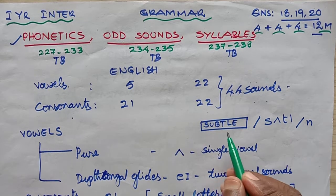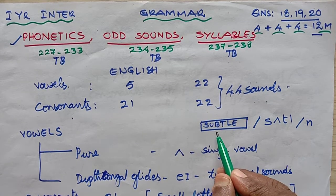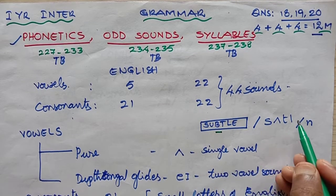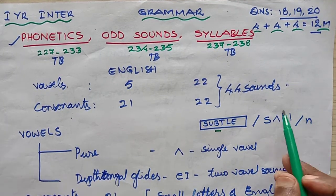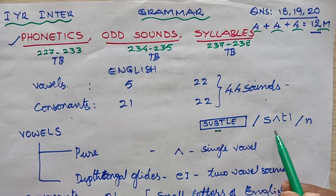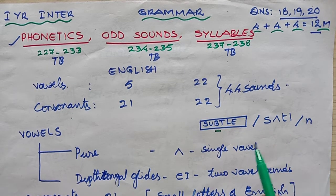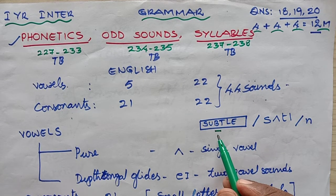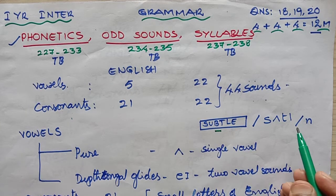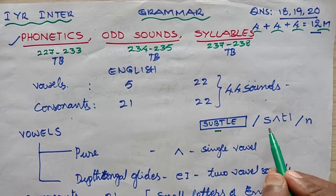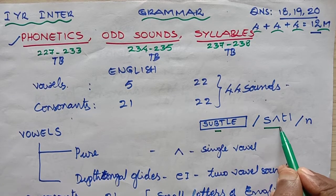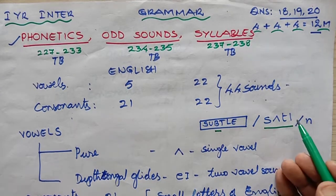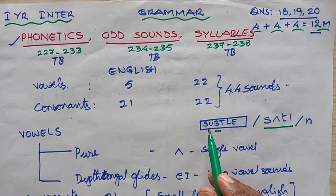Welcome students to first year intermediate grammar classes. In this series of videos we are going to cover question numbers 18, 19, and 20, and that will give us 4 plus 4 plus 4 — just 12 marks. Now 12 marks is quite a big amount in our 100 marks paper.